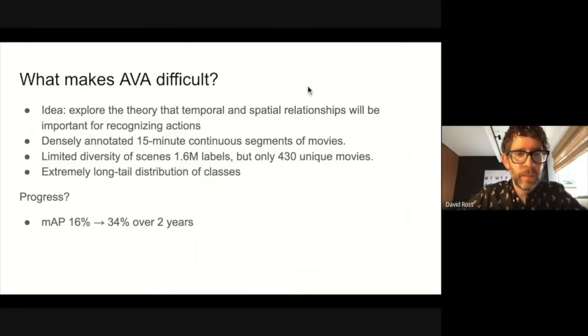So what makes AVA difficult? When we first set out to create AVA, we anticipated that temporal and spatial relationships would be critically important for recognizing actions. For example, sit is followed by stand, which is followed by shake hands. To explore this theory, we densely annotated 15-minute continuous segments of movies with labels provided at one frame per second. This had two effects. First, it limited the total number of unique movies annotated. So although the dataset has over 1.6 million action labels, it contains just over 400 unique movies. And second, it produces a long-tail distribution over classes. These are a couple of the factors that make the dataset challenging. So two years after its release, the best mean average precision score on AVA has increased to only 34%. So significant headroom remains in this challenge.